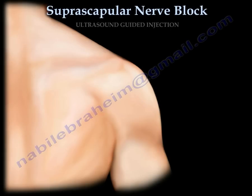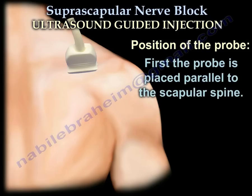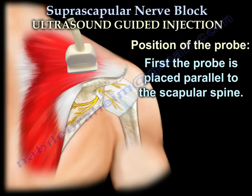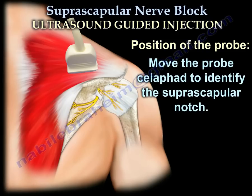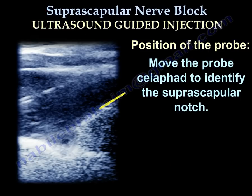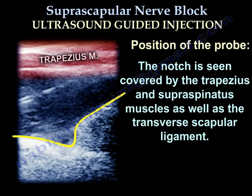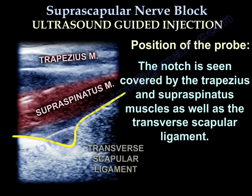Ultrasound-guided injection of the suprascapular nerve. The patient will sit upright. Place the probe parallel to the scapular spine, then move the probe cephalad to identify the suprascapular notch. The notch is seen covered by the trapezius muscle, the supraspinatus muscle, and the transverse scapular ligament.